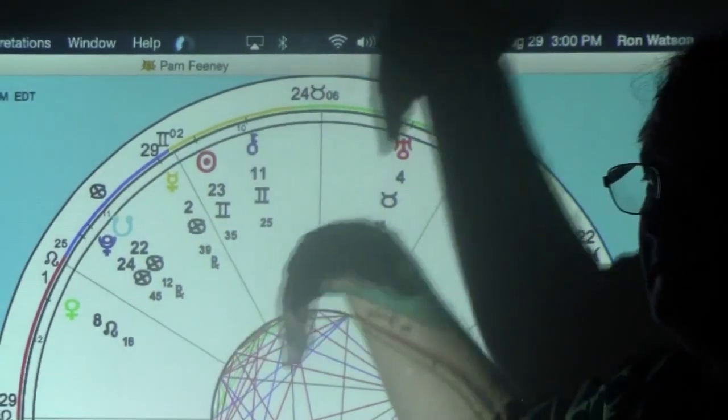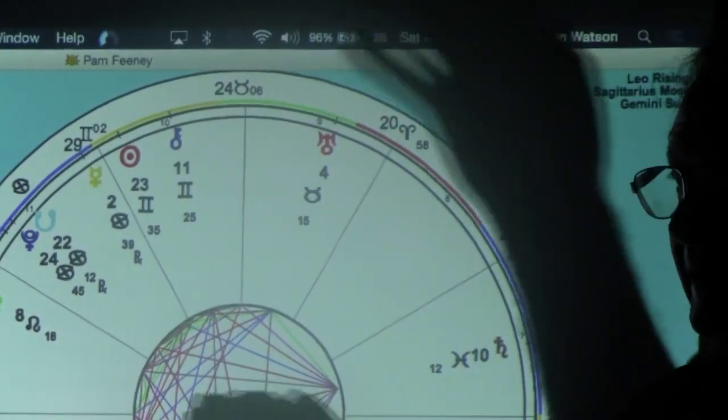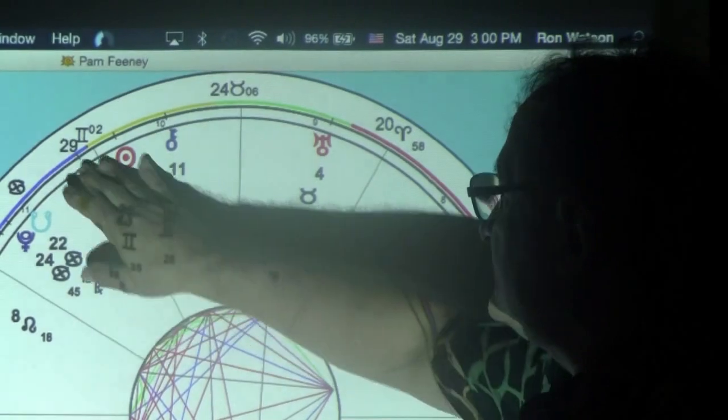Sun and Gemini is essentially somebody who can communicate and teach, or write. It's good for writing. And it's in a career house. It's right on the cusp. Actually it's on the cusp of the 11th.